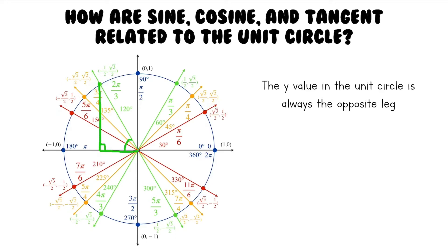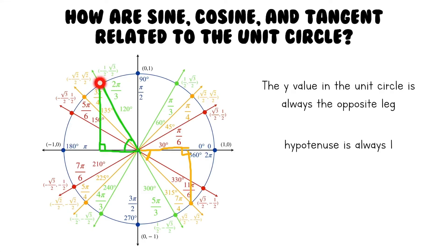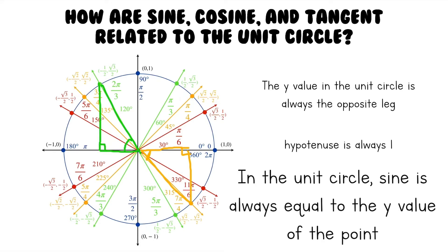Let's take a look at another angle — the 7 pi over 4 angle. This is the reference angle right here. If we draw a triangle, we draw a line here, another leg here, and here's our right angle. The opposite leg of this reference angle is this line right here, which is the same as the y value of this point because this is a vertical line. In both of these triangles, the y value is always the opposite leg of the reference angle. The hypotenuse of these triangles is always 1 — it's always a radius of the circle. Since sine is always opposite over hypotenuse, and y is always the opposite and the hypotenuse is always 1, the sine is always equal to the y value of a point, because it's y over 1, which is just y.